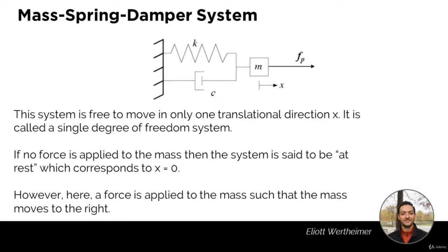In order to understand how to apply these equations, let's look at an example of a mass-spring-damper system. This system is free to move in only one translational direction, the direction X. This is called a single degree of freedom system because it can only move in one direction. If no force is applied to the mass, the system is said to be at rest, which corresponds to X equals 0 — no energy is inputted, nothing is moving. However, here we apply a force to the mass such that the mass moves to the right in the direction X.